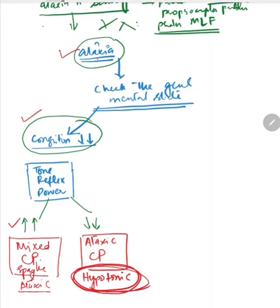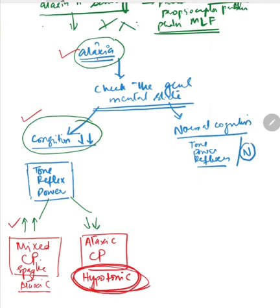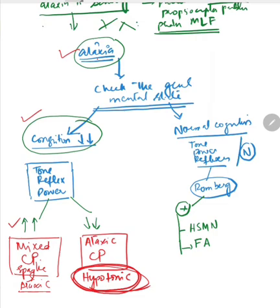If you see that the child has normal cognition, then again check tone, power, and reflexes. If these are all normal, then check Romberg. If Romberg is positive, there are two conditions which have ataxia and are Romberg positive: one is HSMN (hereditary sensory motor neuropathy), and the other is Friedrich ataxia.